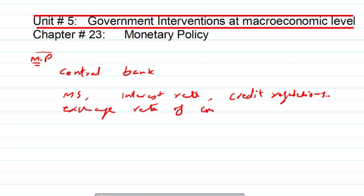Exchange rate, which is basically manipulated by the central bank, is not in the power of the syllabus right now as per the recent syllabus. So our main focus will be on money supply, interest rate, and credit regulations. By defining monetary policy, we can say that it is the policy of the central bank that manipulates money supply, interest rate, and credit regulations to achieve multiple macroeconomic objectives by changing aggregate demand in the economy.